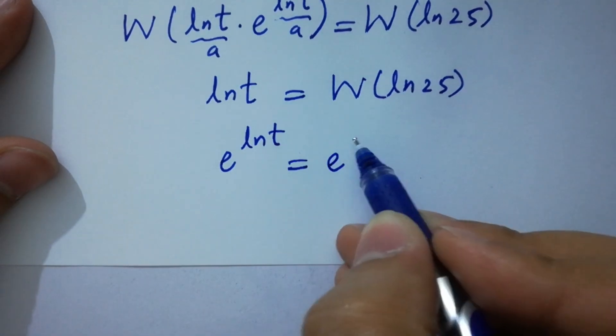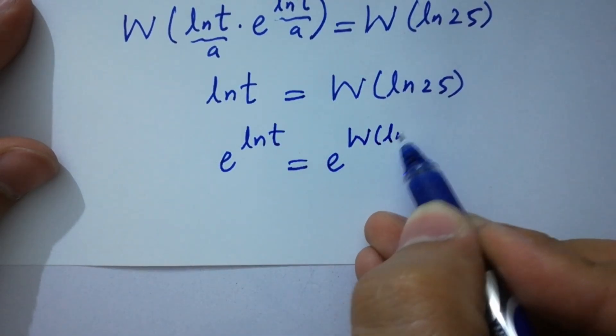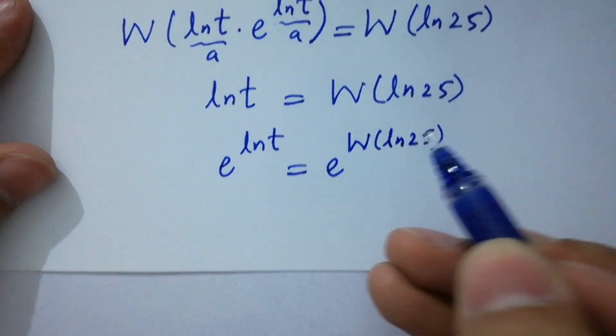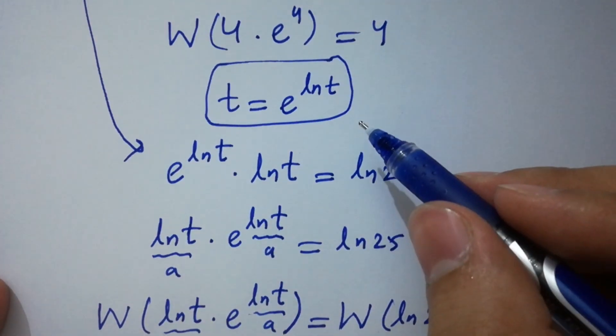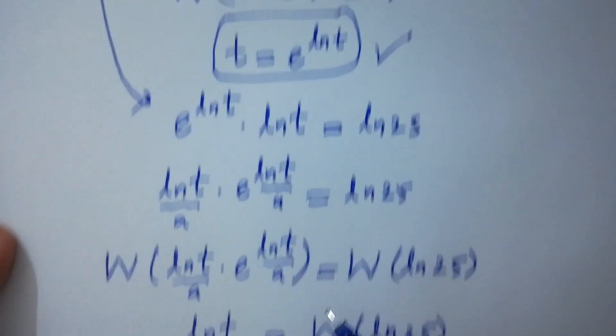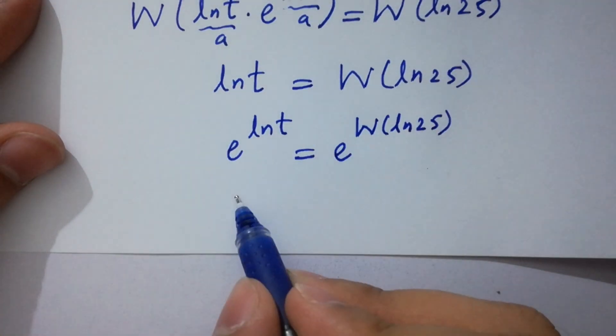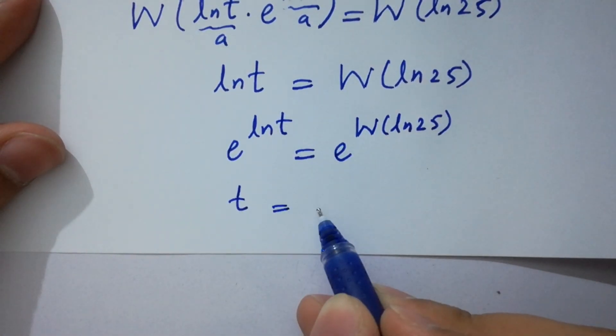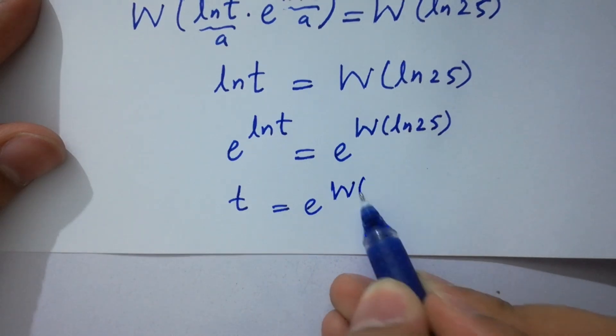Here you can see ln t equals W of ln 25. So it will be t equals e to the power W of ln 25.